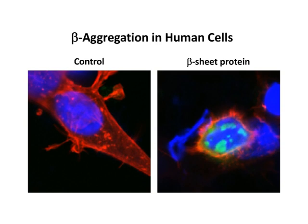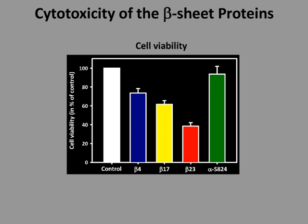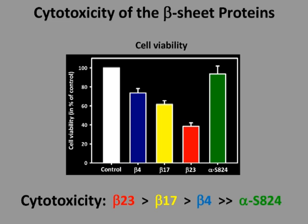In order to investigate beta-aggregation toxicity, we selected three of the artificial proteins called beta-4, beta-17, and beta-23, and expressed them transiently in HEK293T cells. The beta-protein expressing cells adopted a collapsed shape with a disturbed actin cytoskeleton. Aggregates accumulated mostly in the perinuclear space — here seen for beta-23 — and the nuclei were often deformed. The aggregates were positive for amyloid staining dyes and reduced cell viability substantially. Cell viability measured by MTT assay showed increasing cytotoxicity from beta-4 to beta-23, while an alpha-helical control protein, indicated by the green bar, was not toxic.